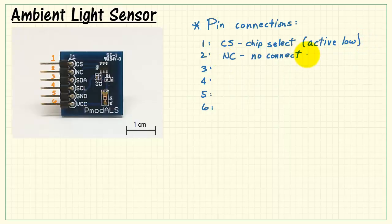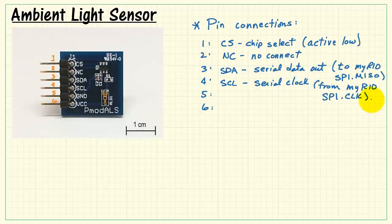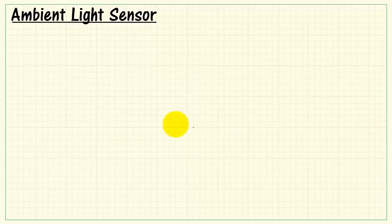Pin 2 is a no connect. Pin 3 SDA, that's serial data out. You want to connect this to the MyRio SPI MISO or master in, servant out. SCL serial clock. This will be from the MyRio SPI serial clock output. Ground and VCC. That would be the power supply connections. And 3.3 volts again is recommended for this board.